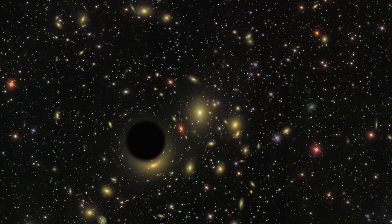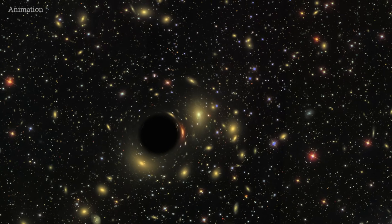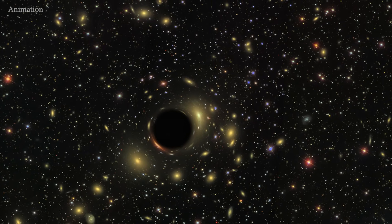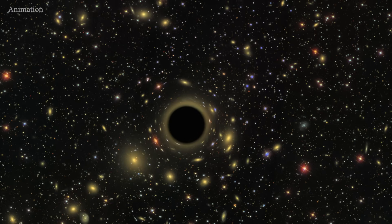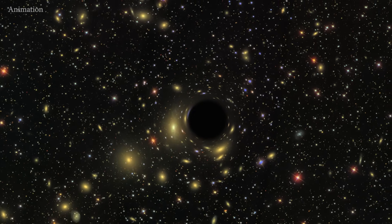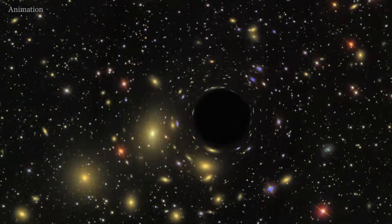But in between these extremes is something much harder to find, intermediate-mass black holes. They range from a few hundred to a few hundred thousand times the mass of our sun.